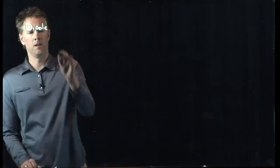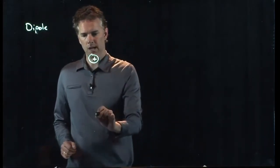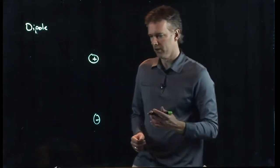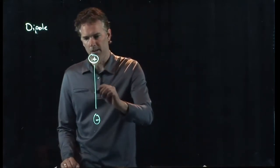So let's go back to our dipole for a second. We know what a dipole looks like: it's a positive charge and then a negative charge. And now we know what the electric field looks like for a dipole. It goes like this.